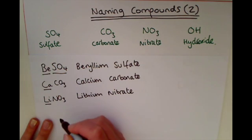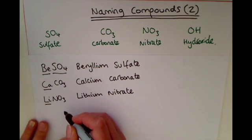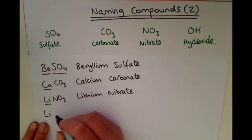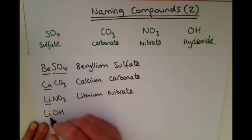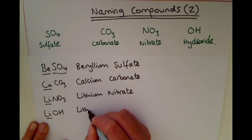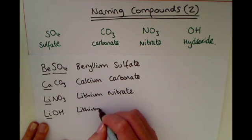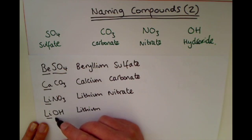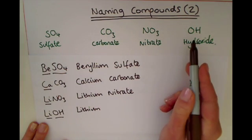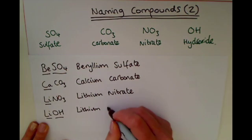An example for a hydroxide: again, if we use lithium, we know that's lithium from the periodic table. And the final part is OH, which means hydroxide, giving us lithium hydroxide.